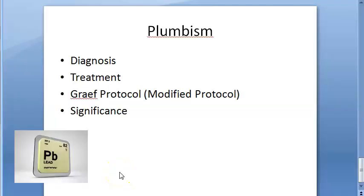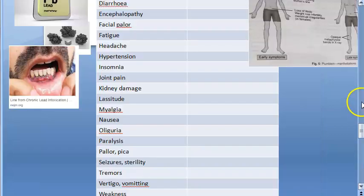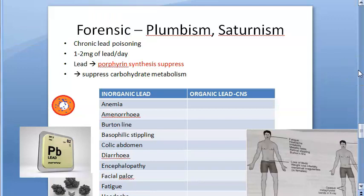In this video we want to look at the diagnosis, treatment, Graef protocol, and significance of plumbism. Basically, plumbism is chronic lead poisoning. Lead leads to porphyrin synthesis suppression and suppression of carbohydrate metabolism.